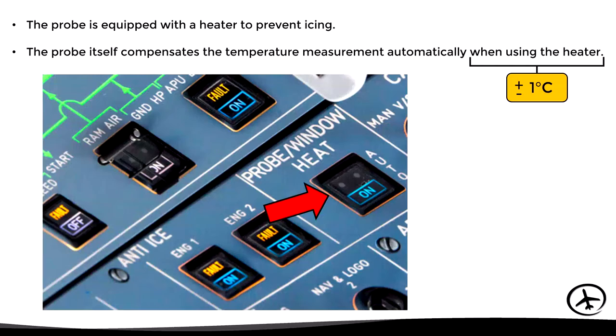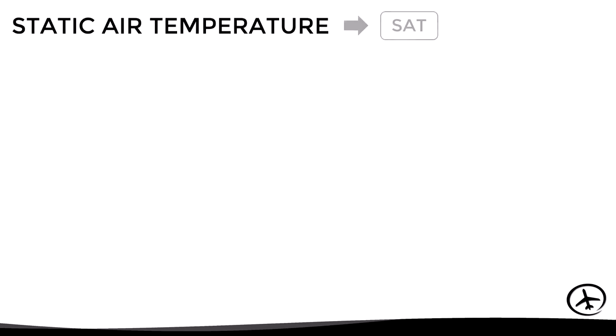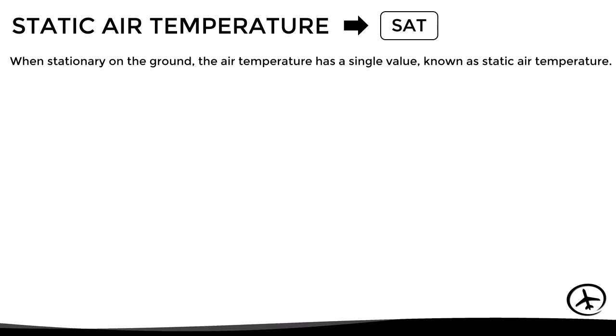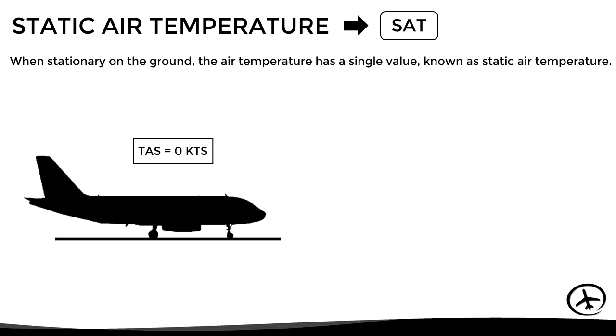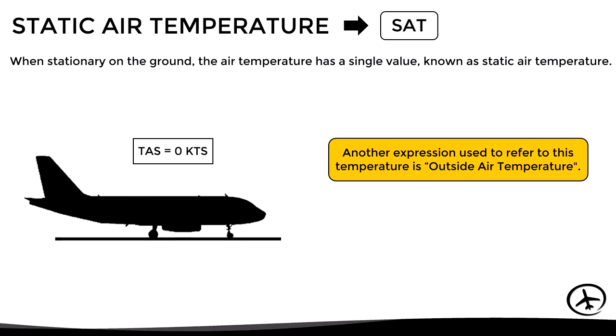Let's now look at the different types of temperatures and terms used in aviation. The static air temperature, abbreviated as SAT, is the air temperature when the aircraft is stationary on the ground and has a single value. Another expression used to refer to this temperature is outside air temperature, abbreviated as OAT, which is the temperature indicated by the thermometer when the aircraft is on the ground. However, during flight there are certain effects that tend to increase the temperature locally.